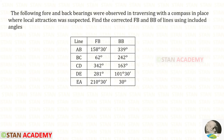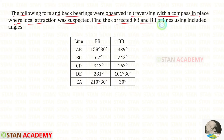Hello everyone. Today we are going to do a problem based on compass surveying. Let us read the question. The following fore and back bearings were observed in traversing with a compass in a place where local attraction was suspected. Find the corrected fore bearing and back bearing of lines using included angles.